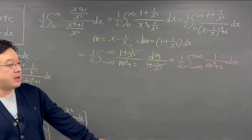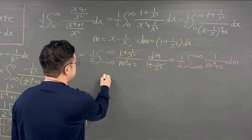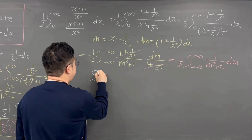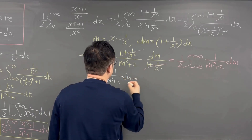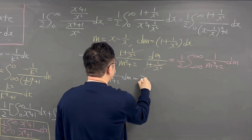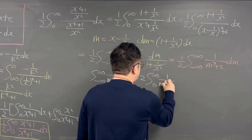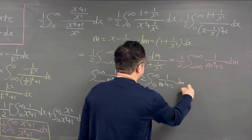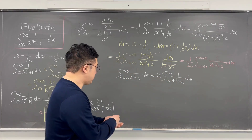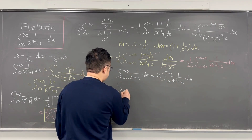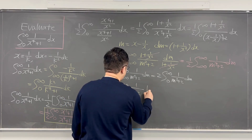Making sure our integral is an even function: the integral from negative infinity to infinity of 1 over m squared plus 2 dm is an even function, so this equals 2 times the integral from 0 to infinity of 1 over m squared plus 2 dm. The 1 over 2 cancels with the 2, so we're really working on the integral from 0 to infinity of 1 over m squared plus 2, dm.